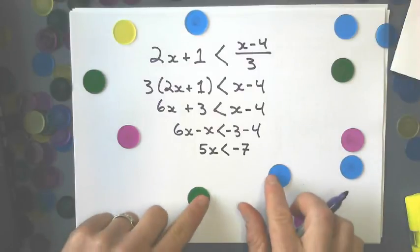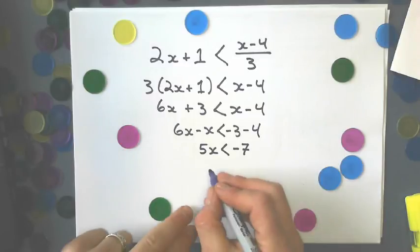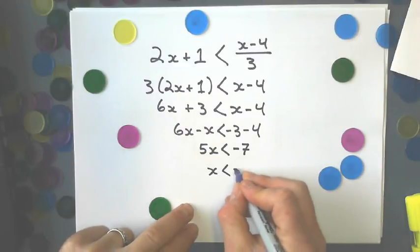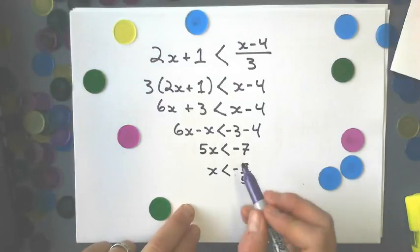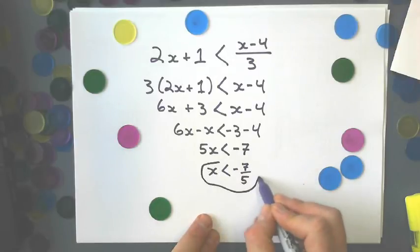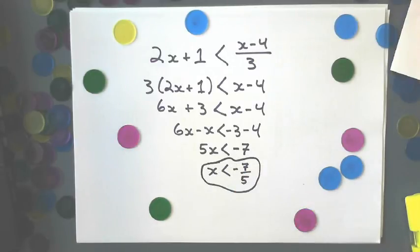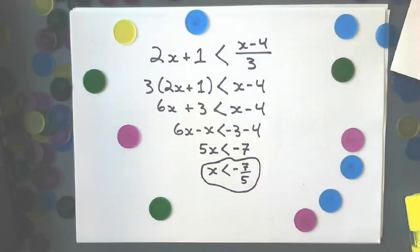So collect like terms over here and collect like terms over here. I get 5x < -7. And I'm not going to switch it because I'm dividing by a positive. x < -7/5. I could make that a decimal, but I don't want to. It's fine as a fraction. Okay, so that doesn't change. That inequation stays less than the entire way down. And that's the finished product on that one.